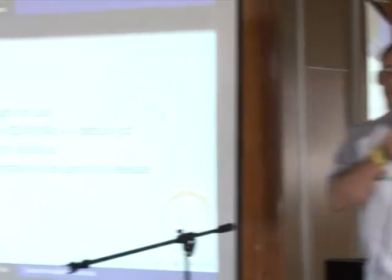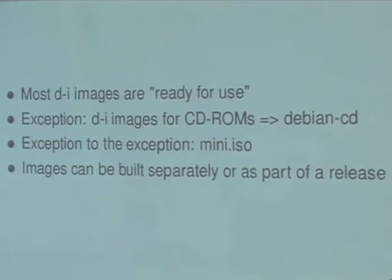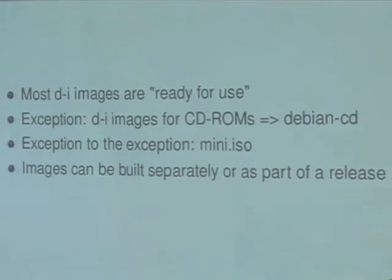Most of the installation methods I showed you in the beginning are ready for use — like the HD media installation method, the mini ISO, the netboot image. The exception are the images for CD-ROM, because we only built the initrd and the kernel, so you need to embed it on a CD together with the remaining UDEPs that need to be loaded, together with ISO Linux or whatever bootloader you need for your architecture. The exception to the exception is the mini ISO, which is self-contained and is generated as part of DI image generation. And of course, images can be built separately or as part of a release.